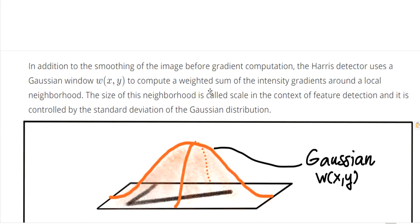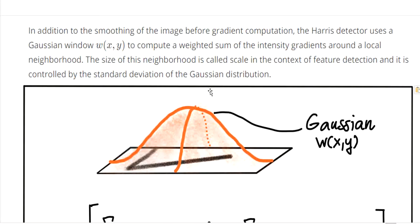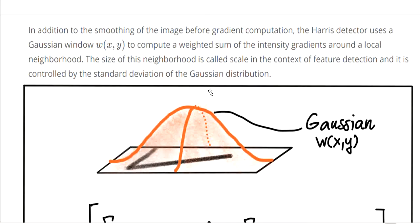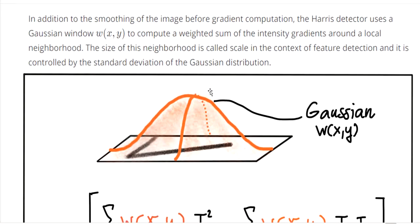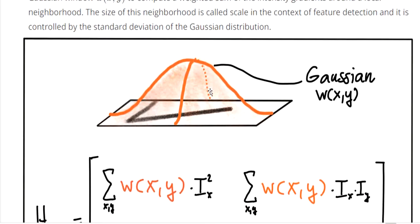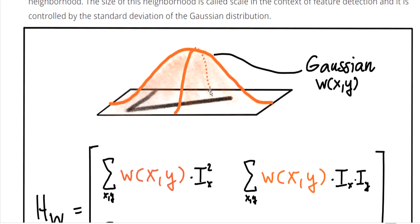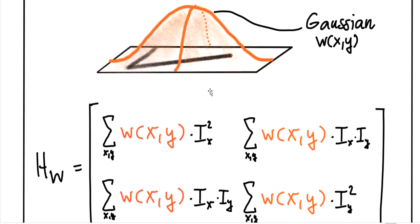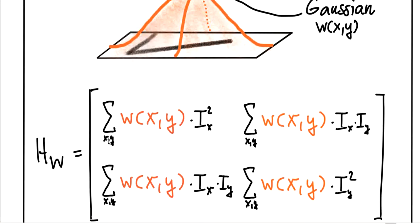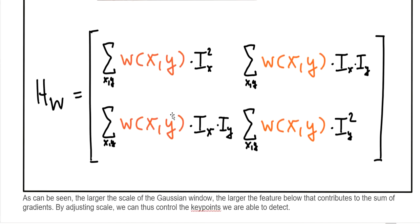In addition to smoothing the image — as you learned in the last video using Gaussian to reduce noise — the Harris detector uses a Gaussian to compute the weighted sum of intensity gradients around the local neighborhood. The size of the neighborhood is called the scale in the context of feature detection and is controlled by the standard deviation of the Gaussian distribution. They add the weight into the covariance matrix. The larger the scale of the Gaussian window, the larger the filter below contributes to the sum of gradients, so by adjusting the scale, we can control which key points we are able to detect.